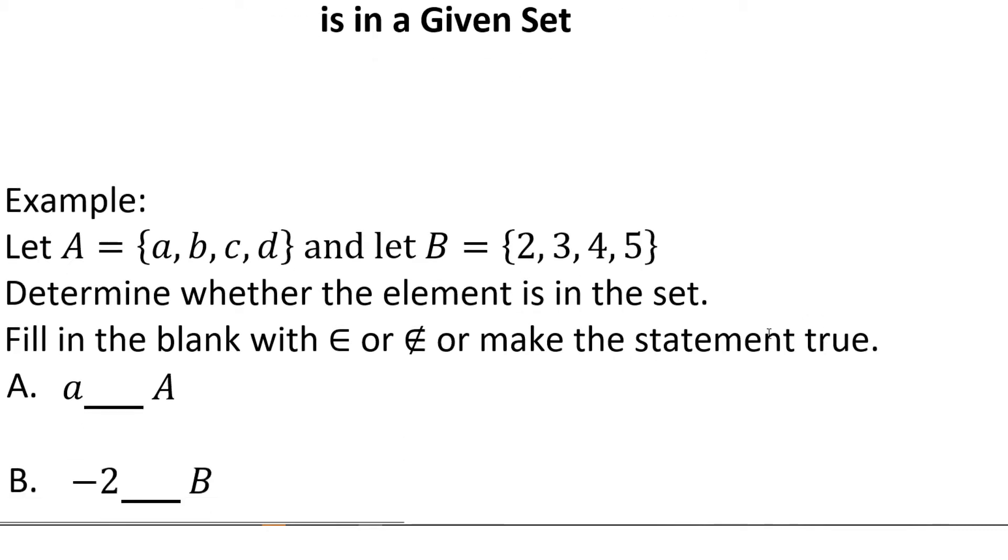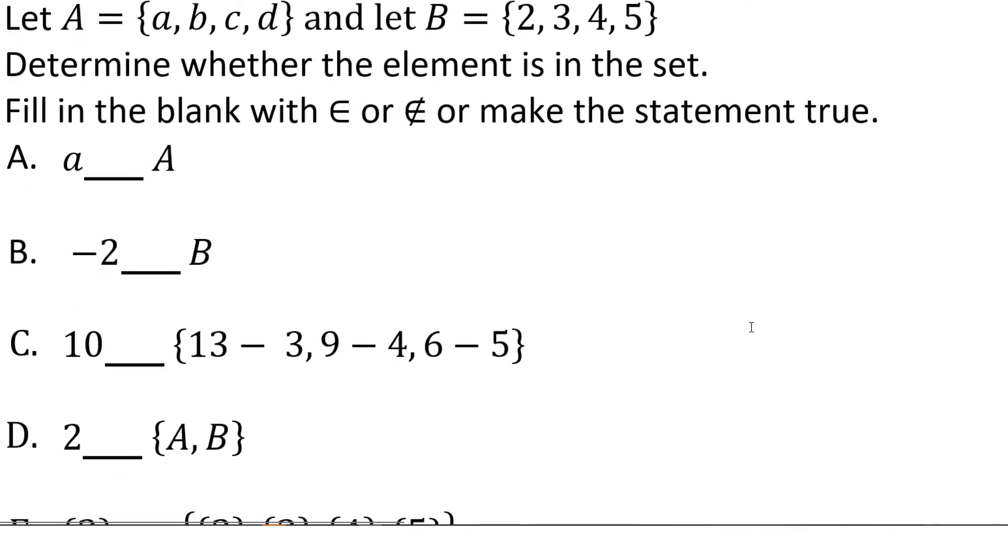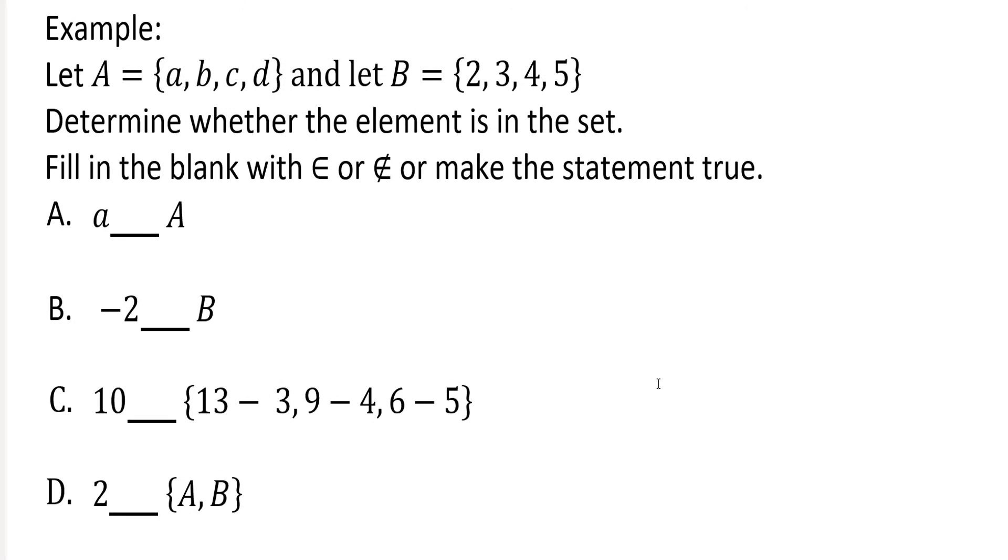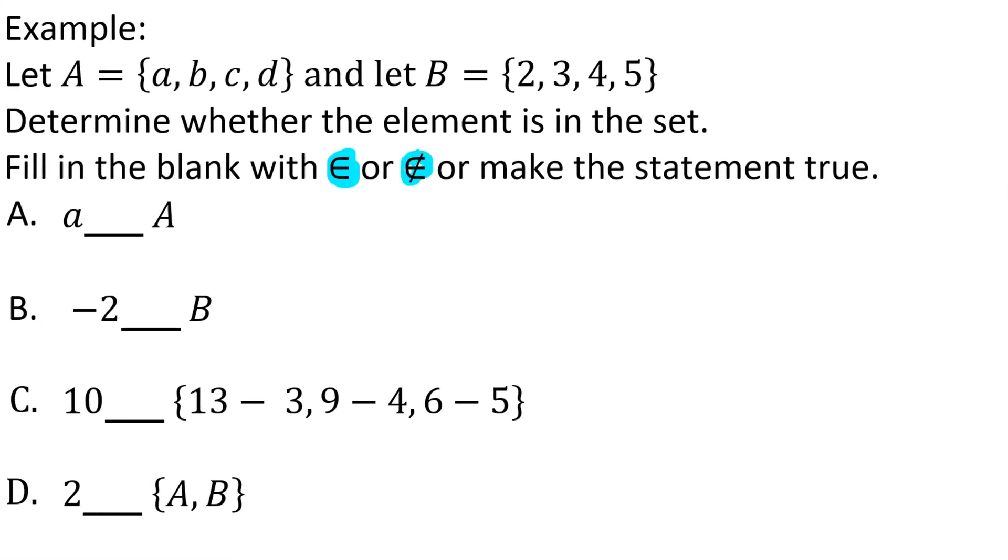The first example we're going to start with, we're going to let capital A represent the set containing lowercase a, b, c, and d. And we're going to let capital B represent the set containing 2, 3, 4, and 5. We're going to determine whether the given element is in the set. And we're going to fill in the blank with either this elongated E or this elongated E with a line through it. The symbol on the left represents is an element of. And as you might guess, the symbol on the right means is not an element of.